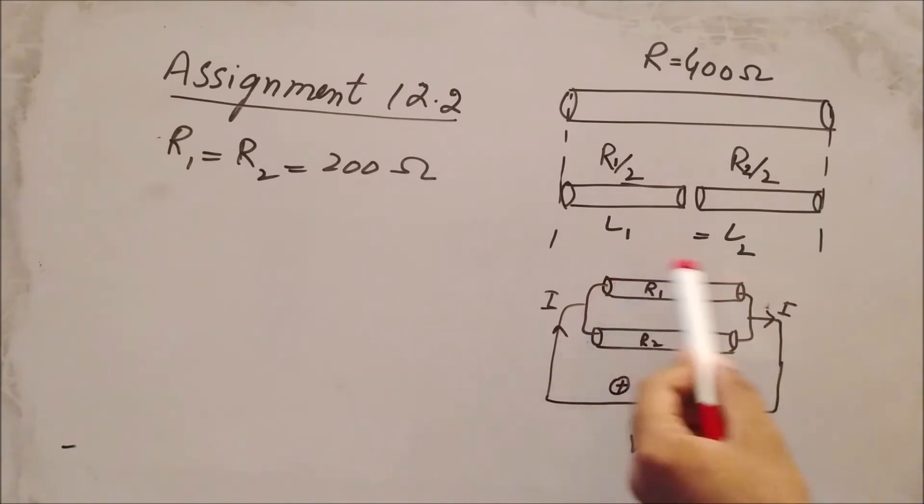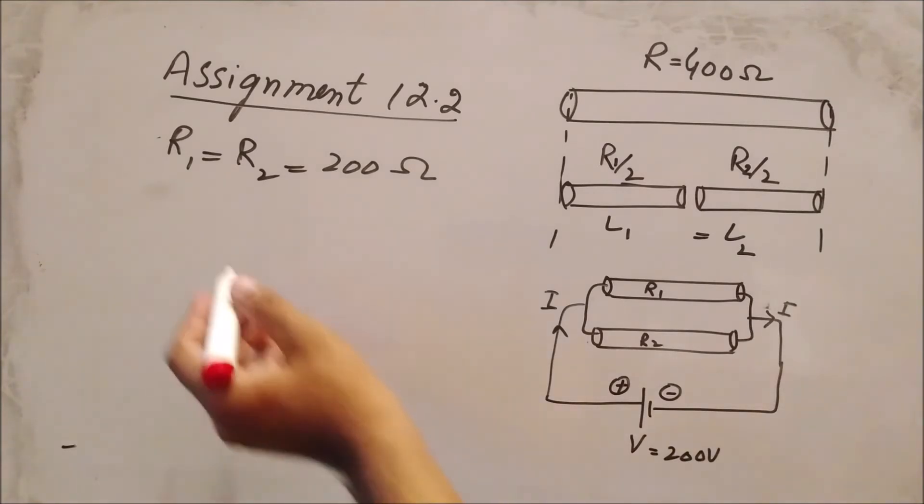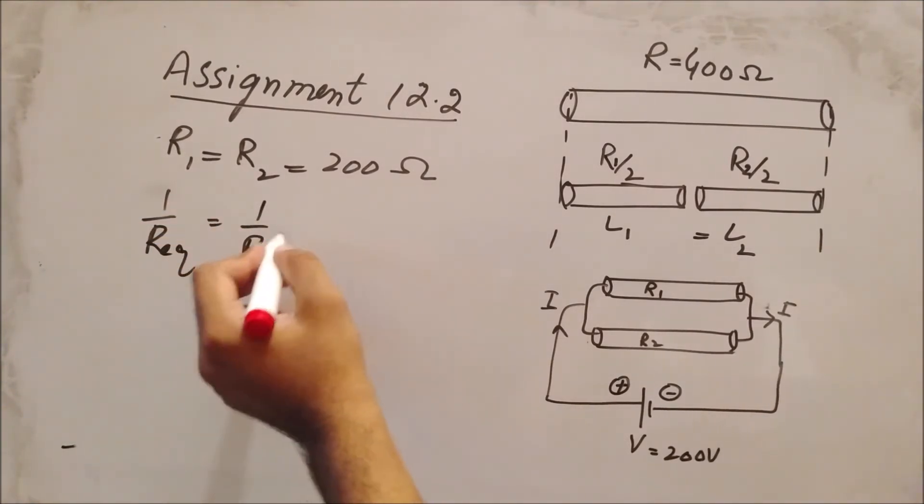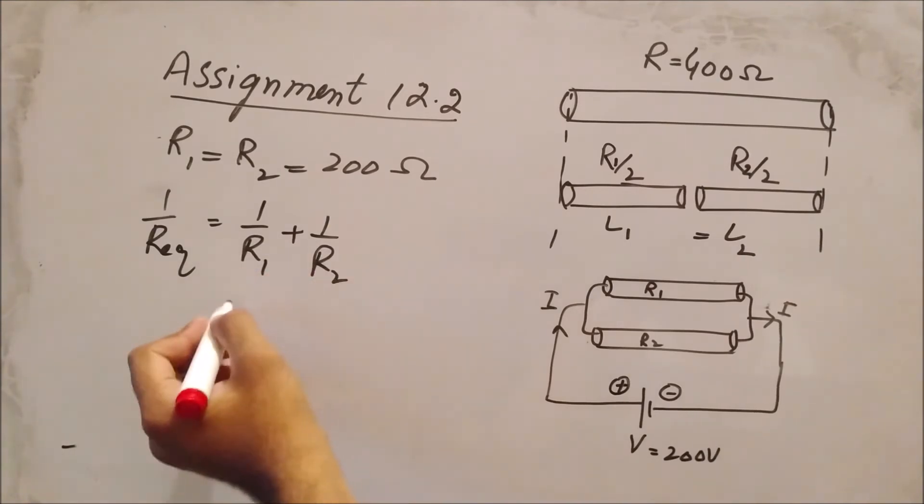We need to find the equivalent resistance in parallel combination. The formula is: 1/Req = 1/R1 + 1/R2. Both resistances are the same.